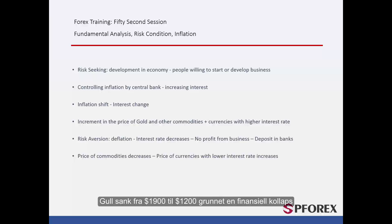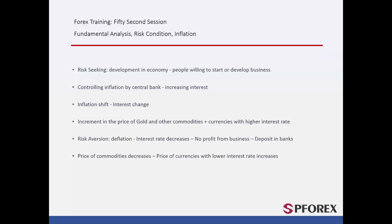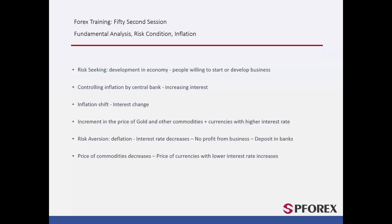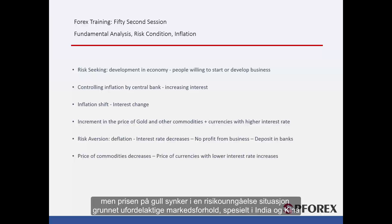Gold decreased from US$1,900 to US$1,200 due to a financial collapse. Gold has an upward trend in a risk-seeking condition; however, its price falls in a risk aversion situation due to unfavourable market conditions, especially in India and China.